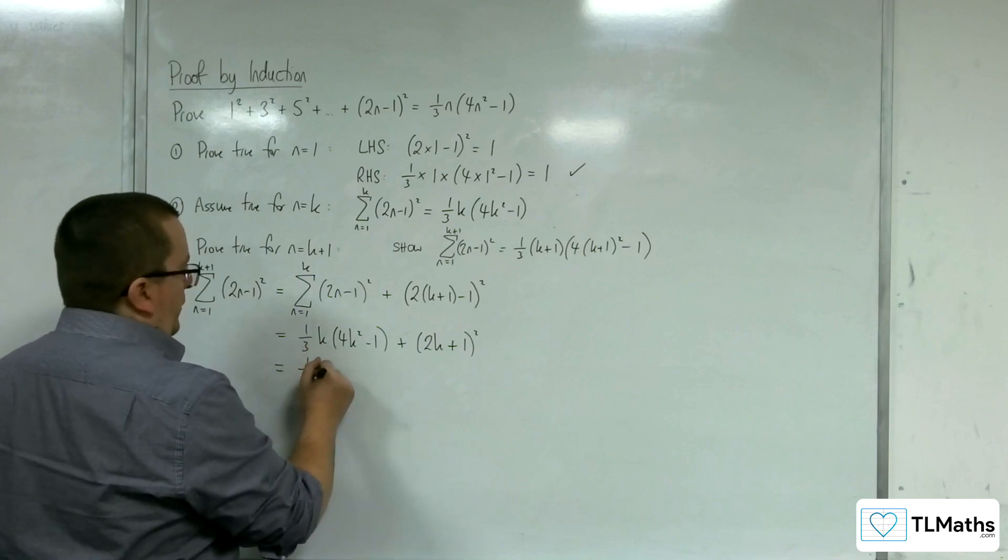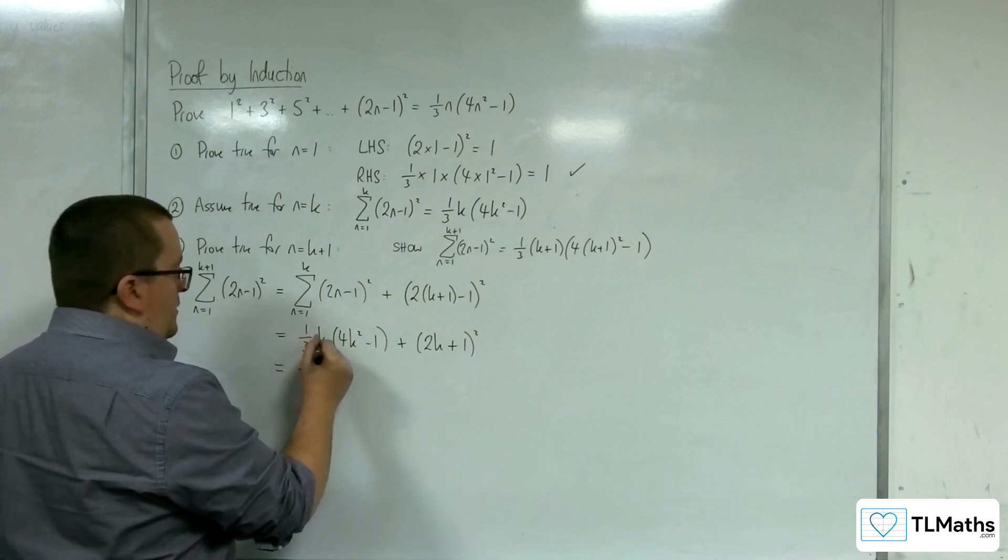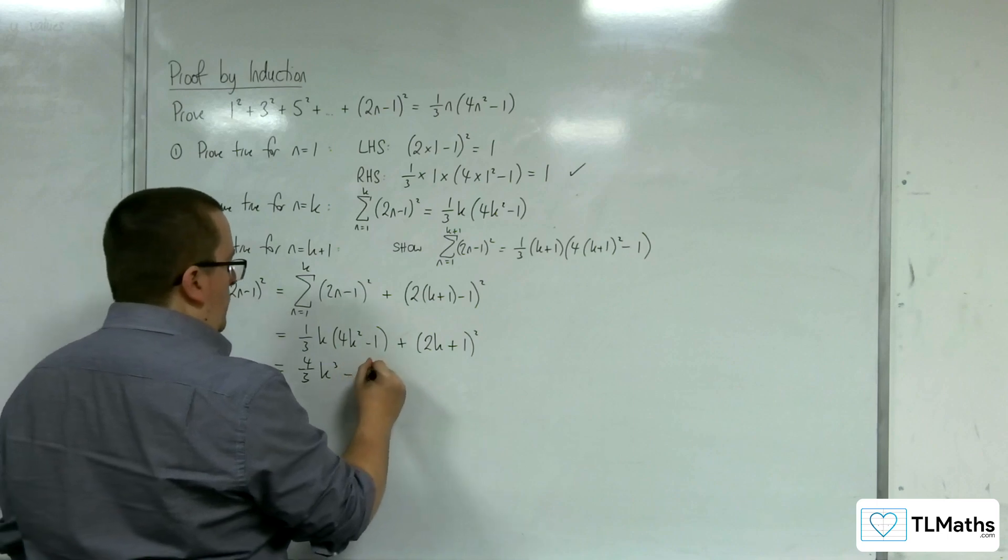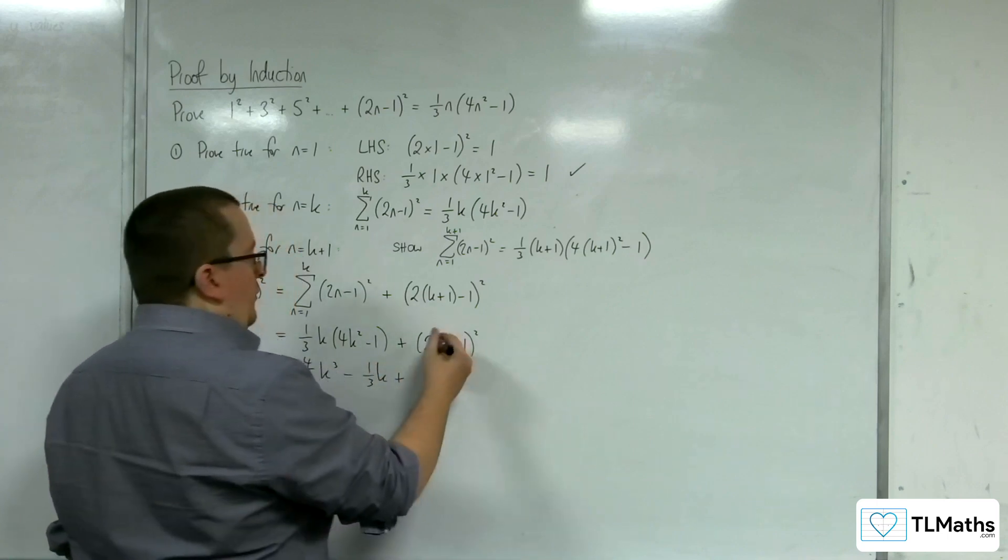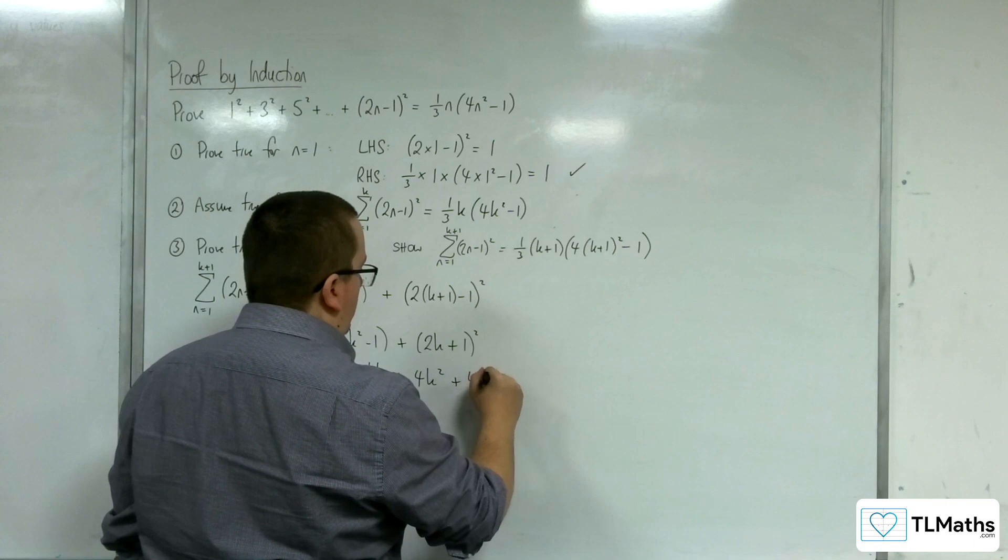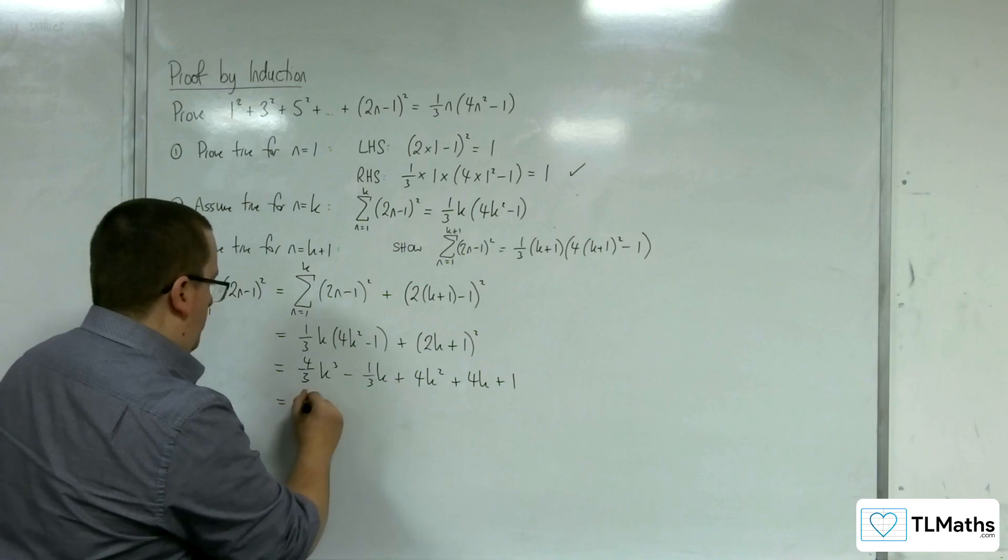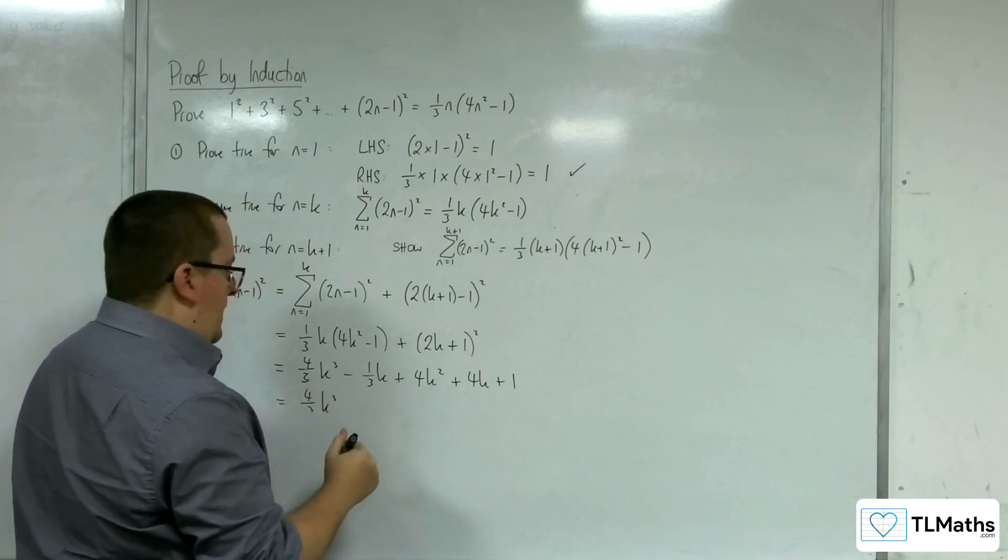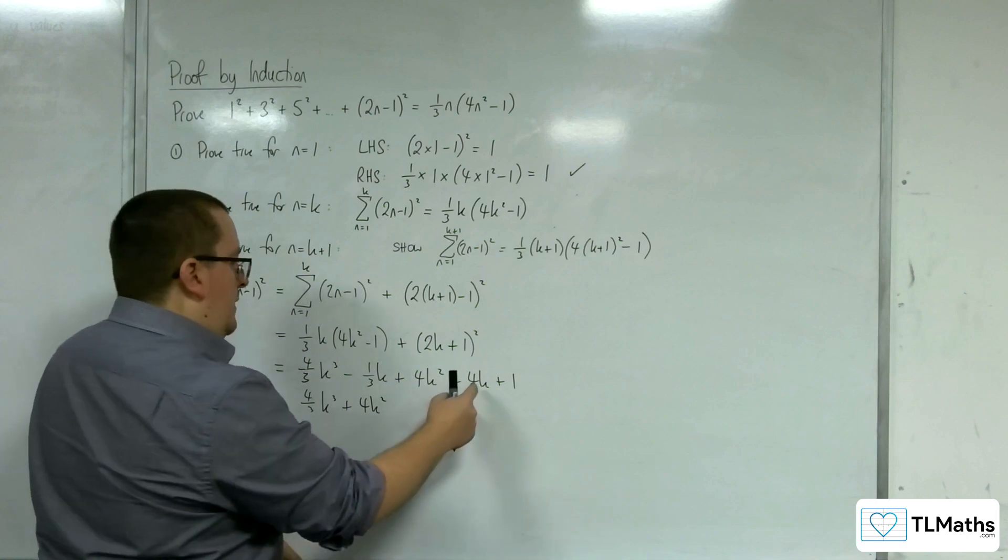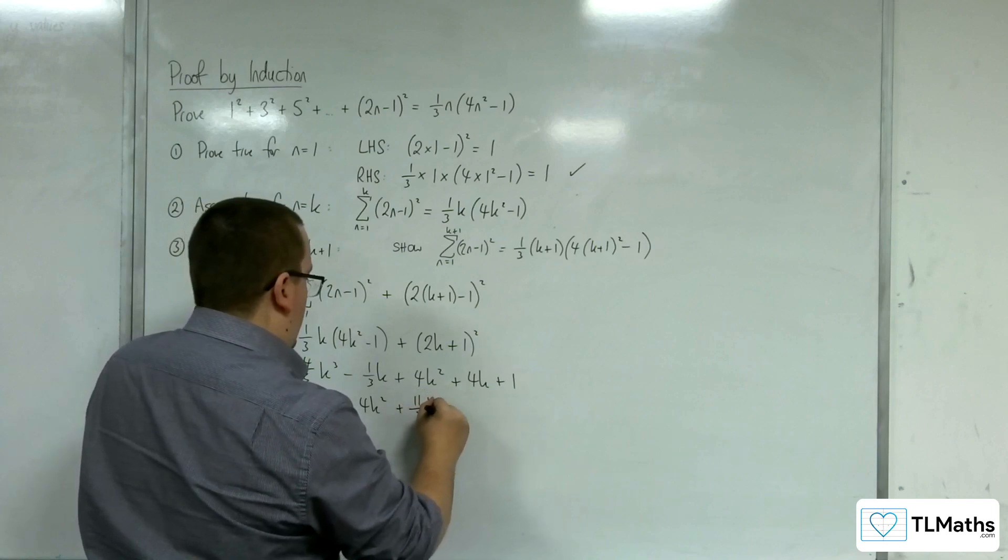Now, I'll probably want to multiply this out, because otherwise I think I'm going to get into a bit of a pickle. So, 1 third times the k times the 4k squared, so 4 thirds of k cubed. Take away 1 third k plus, so multiplying that out, 4k squared plus 4k plus 1. Okay, so 4 thirds k cubed, and then I've got the plus 4k squared, and we've got the minus the third k plus the 4k. So that's 12 thirds, so that'd be 11 thirds k plus 1.